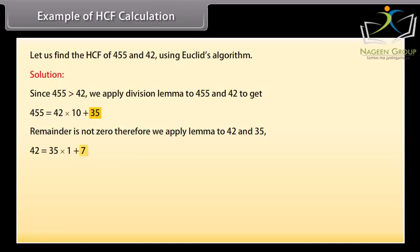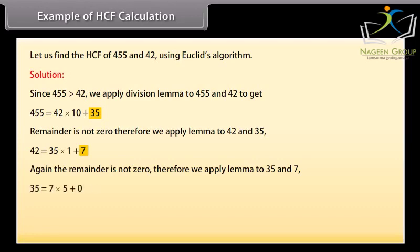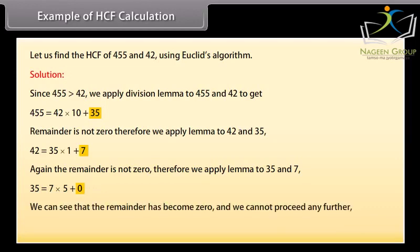Remainder is not 0, therefore we apply lemma to 42 and 35. 42 equals 35 into 1 plus 7. Again the remainder is not 0, therefore we apply lemma to 35 and 7. 35 equals 7 into 5 plus 0. We can see that the remainder has become 0 and we cannot proceed any further. Therefore the HCF of 455 and 42 is the divisor at this stage, which is 7.